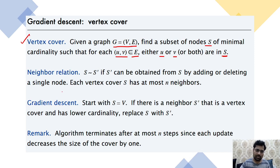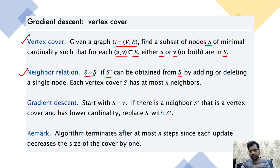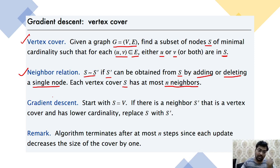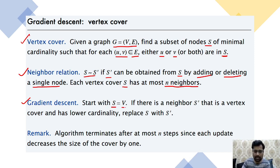The neighbor relation here: s-dash can be obtained from s by adding or deleting a single node. Each vertex cover S has at most n neighbors — if you are deleting or adding something, n numbers of neighbors can be expected from each solution.